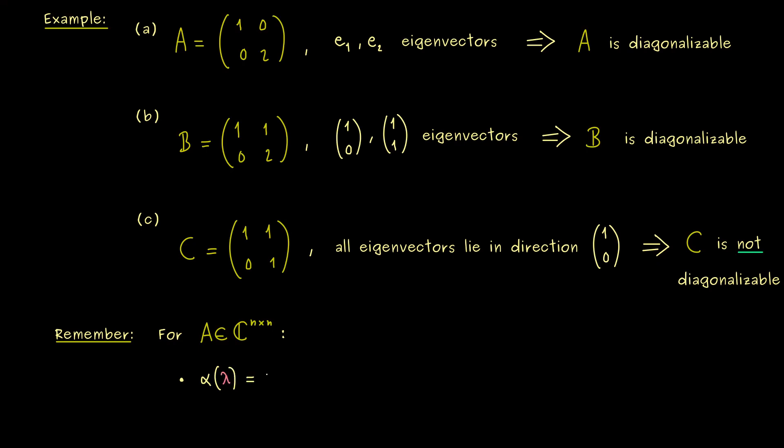We have the algebraic multiplicity and the geometric multiplicity. And you already know, the geometric multiplicity gamma is the important one here, because it tells us how many dimensions we can span. Indeed, it means if we add up all the geometric multiplicities and we get out n, then we find a basis consisting of eigenvectors.